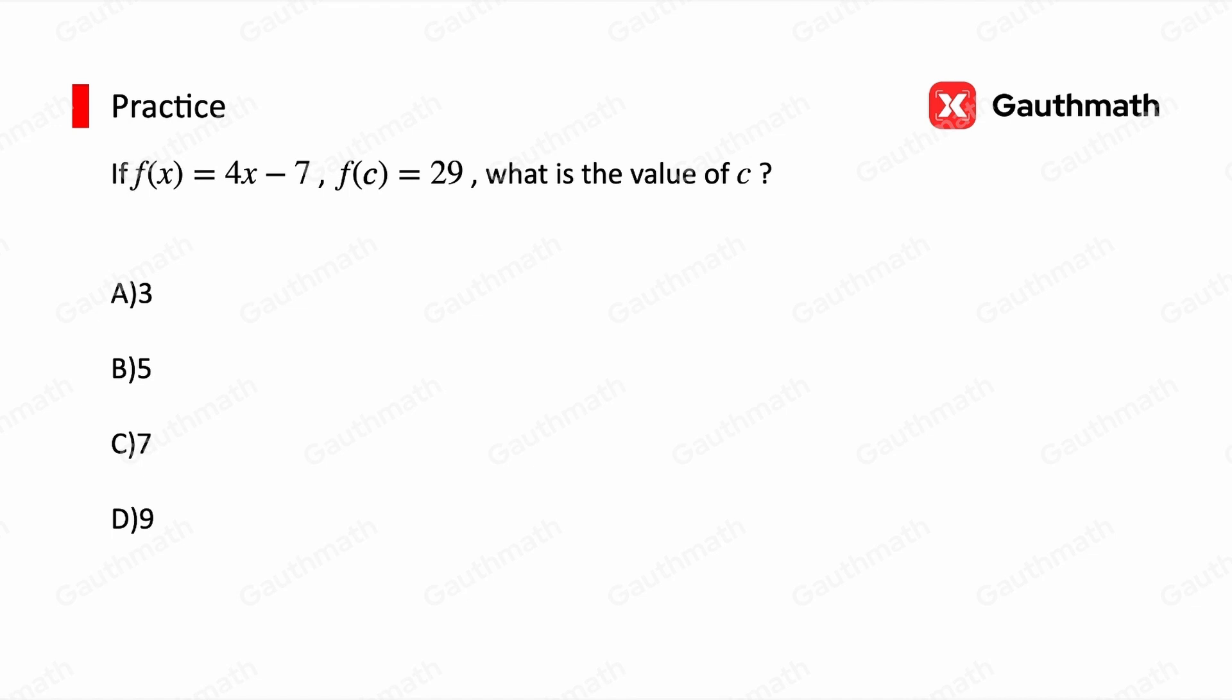Let's do one practice. If f(x) = 4x - 7 and f(c) = 29, what is the value of c? We can first substitute c into the function, so we get f(c) = 4c - 7, and we know that f(c) = 29. Then we can solve the equation: 4c - 7 = 29, so c = 9. The correct answer is D.